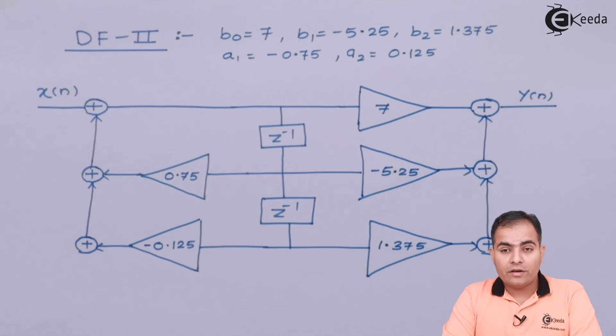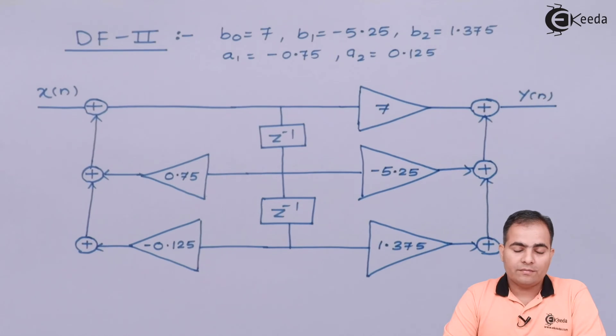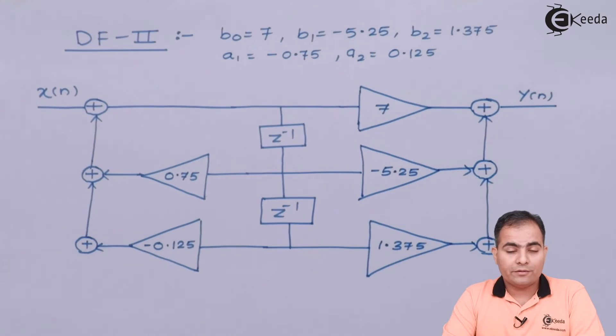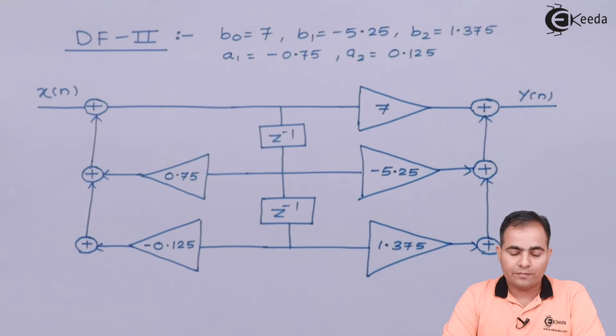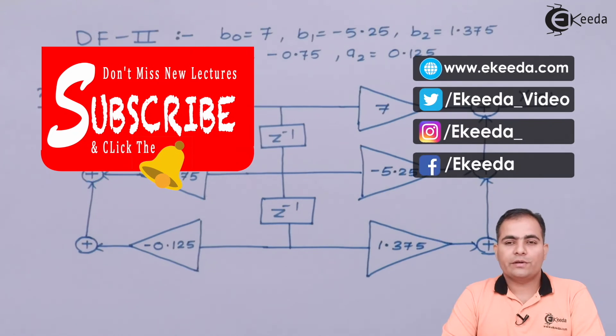Remember that in the next three numericals we will always use the DF2 structure in cascade as well as parallel format. If you know the DF2 structure, you can easily plot the structure for cascade and parallel forms. Thank you for watching this video. Stay tuned with Ikeda and subscribe for further videos. Thank you so much.